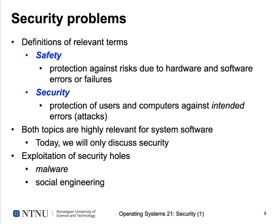It's especially interesting how security problems in systems can be exploited. We call them security holes — holes in the protection of our system. There are two major factors for exploiting a security problem. The first is malware: software explicitly built to exploit security problems. The other is social engineering, which exploits the fact that humans aren't perfect — they may be too trustworthy or sloppy — and this can be used to gain unauthorized access to a system.